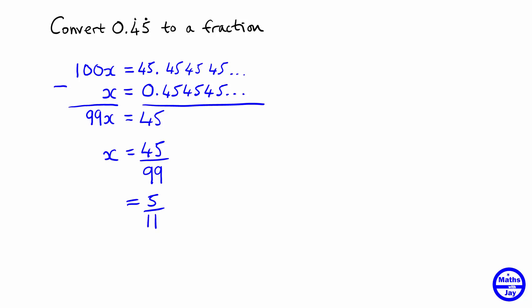And how could you check that answer? So we've got that we think that the answer is 5 elevenths. How could you check that 5 elevenths really is 0.45 recurring?